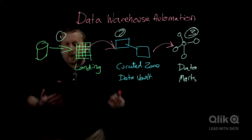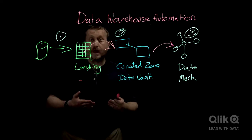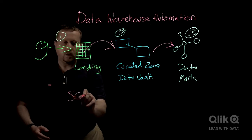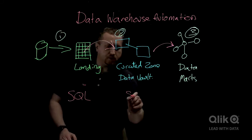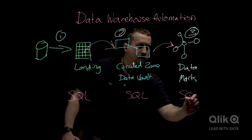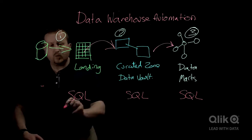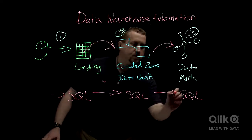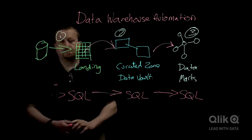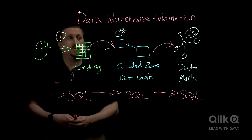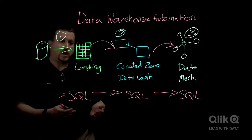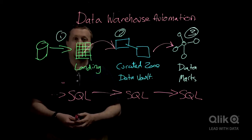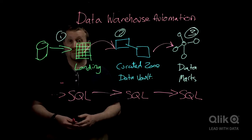So using data warehouse automation tools from folks like Qlik, we can actually generate, model, and create SQL for each one of these zones — without writing any code, using visual tools. And we can also automate how the data flows from one zone to another. So if you'd like to know more about data warehouse automation from Qlik, go to www.qlik.com and search for data warehouse automation. Thanks.